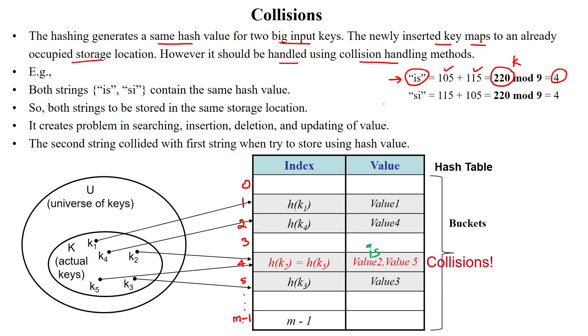Now again, I want to store the second value SI. So SI will be stored based upon the calculation of hash value. Here, ASCII value for S is 115, for I is 105. The key value is again 220 with mod 9, I am getting 4. So again, the same index number 4 is used to store the second value, that value is now SI.